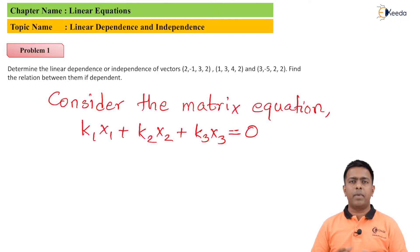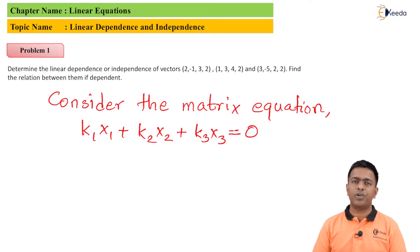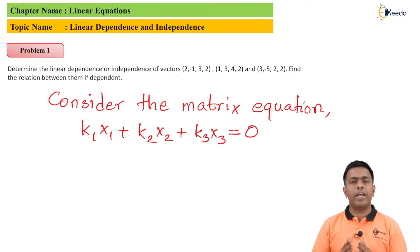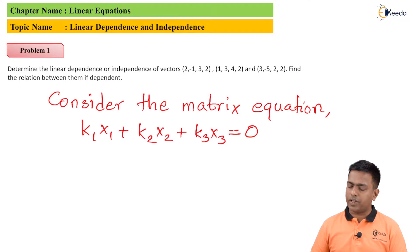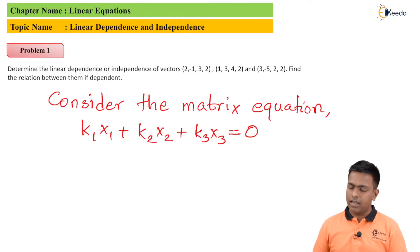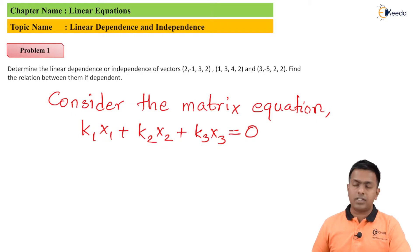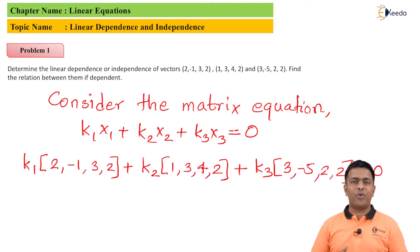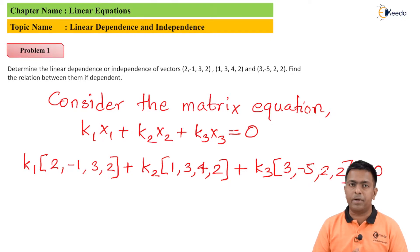The matrix equation is: k1·x1 + k2·x2 + k3·x3 = 0. Here x1, x2, and x3 are the three vectors. I'll call the first one x1, the second x2, and the third x3, and k1, k2, k3 are just constants. After substituting the values of these three vectors, we work toward understanding the linear dependency and independency.